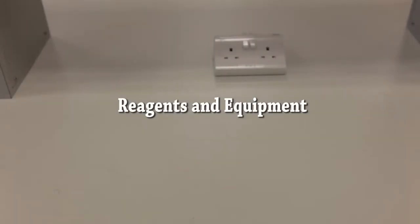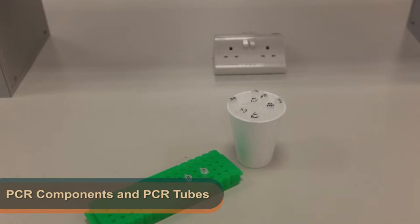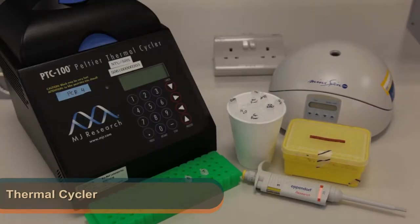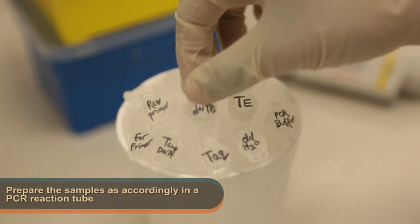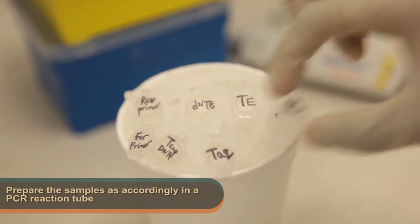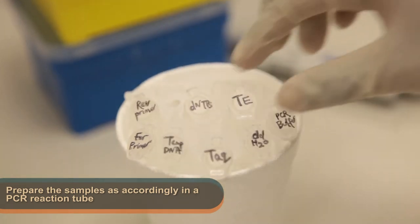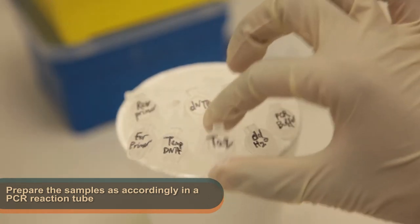These are the reagents and equipment needed. Do check if you have everything before you start. Firstly, prepare the sample as stated in the protocol in a PCR reaction tube. Do remember to label both reaction tubes with their designated labels followed by your initials.